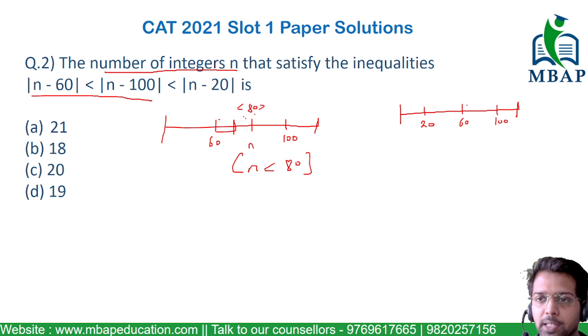All I need to check is would the value of n be more than 60 or less than 60. If I put n as 70, which is more than 60, then 70 to 100 is 30 and 20 to 70 is 50, which satisfies the condition. So I got the range of n to be more than 60.